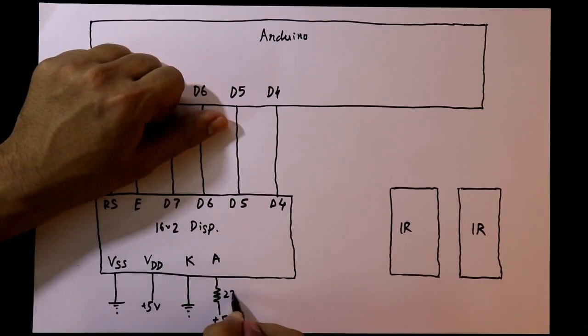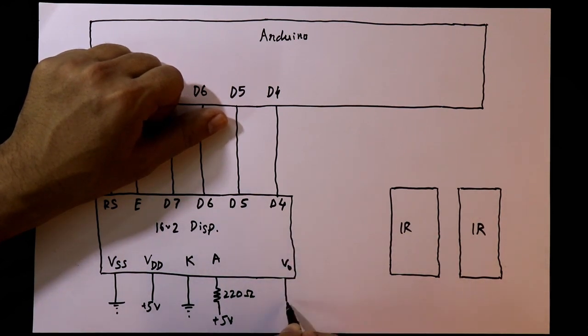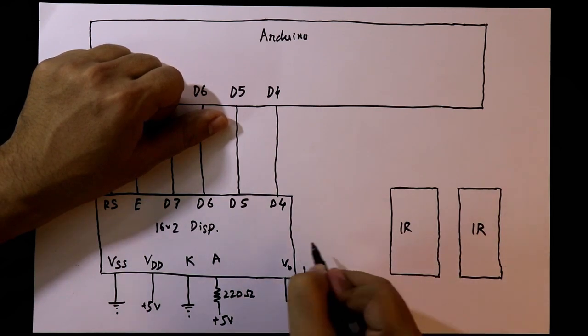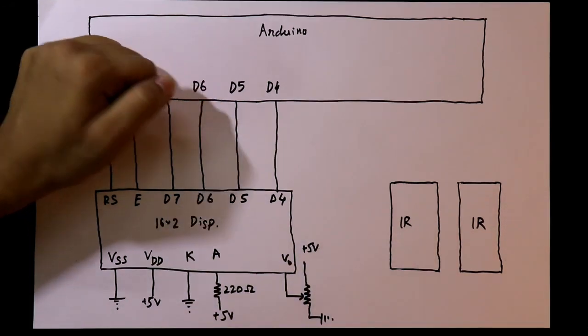The value is 220 ohms. Vout, it should be connected to the potentiometer. One pin is connected to the ground and the other pin of the potentiometer will be connected to the plus 5V.